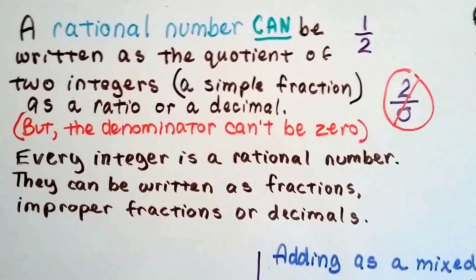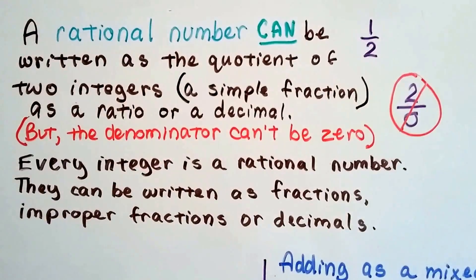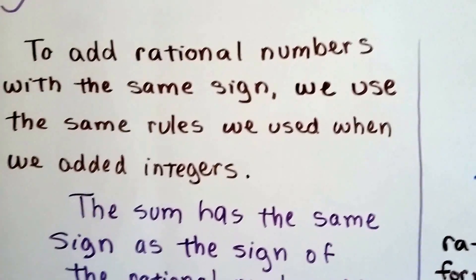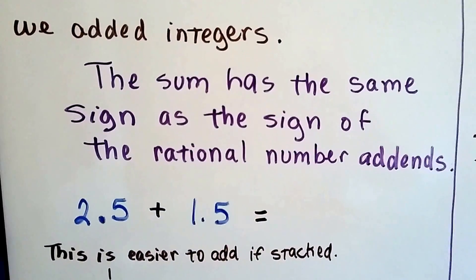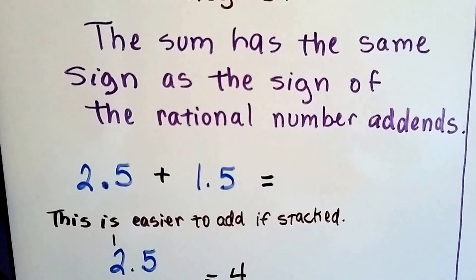Every integer is a rational number. They can be written as fractions, improper fractions, or decimals. So, to add rational numbers with the same sign, we use the same rules we used when we added integers. The sum has the same sign as the sign of the rational number addends.